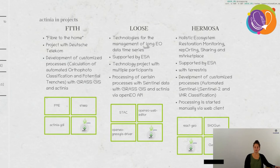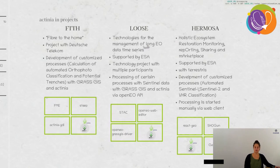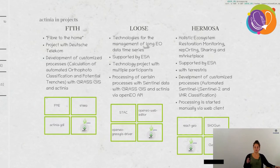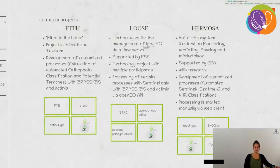The last example is Hermosa, a project together with terrestris. It has a web client built with react-geo — a combination of React.js and OpenLayers — and Shogun. A user starts a job via a dedicated interface for certain processes, the job runs in Actinia, and when finished, a layer is published in GeoServer and shown back in the react-geo web client.